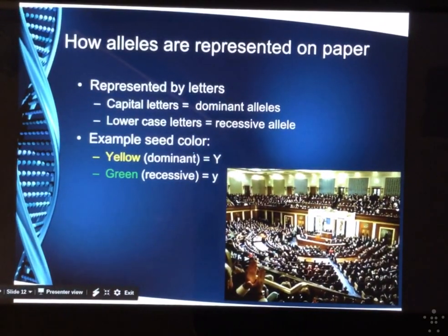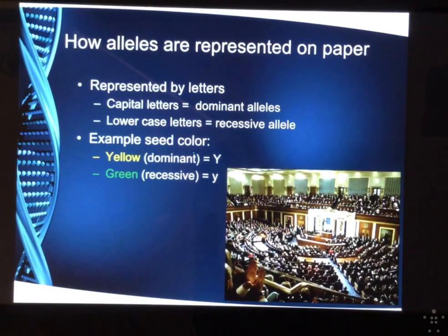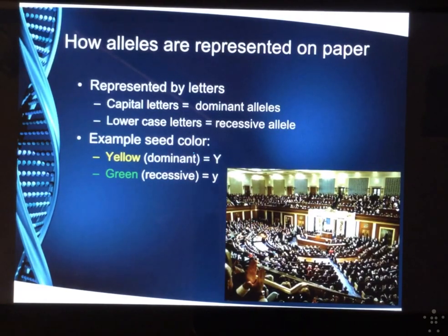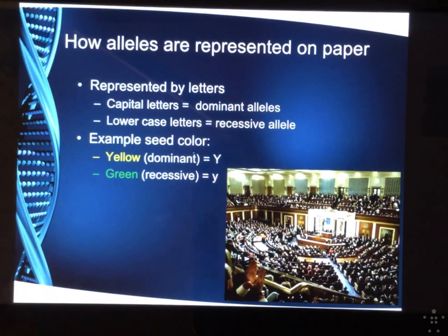How are alleles represented on paper? We use letters — capital letters equal the dominant alleles, and lowercase letters equal the recessive alleles. For example, yellow was a dominant seed trait and green was recessive, so we give yellow a big Y and green a lowercase y. You might ask: could we use a big Y for yellow and a little g for green? That's possible, but when we talk about dihybrid crosses, using two different letters for the same trait gets confusing. This is why we stick with the same letter no matter what.